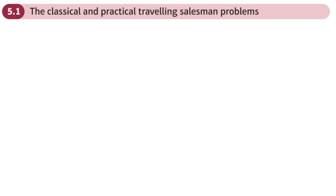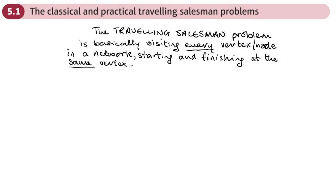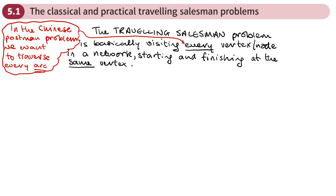This is the first section of Chapter 5, which is the Travelling Salesman Problem. This section is about the classical and practical Travelling Salesman Problems. The Travelling Salesman Problem can be thought of as a problem where we want to visit every vertex or node in a network, starting and finishing at the same vertex. This is slightly different to the Chinese Postman Problem, where we want to traverse every arc, although we also start and finish at the same vertex. So the Travelling Salesman Problem is about visiting every vertex.